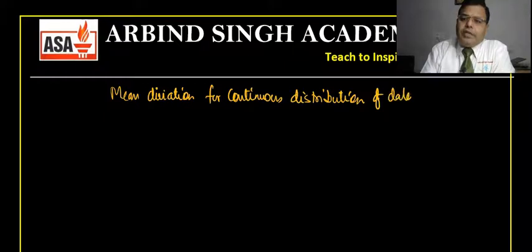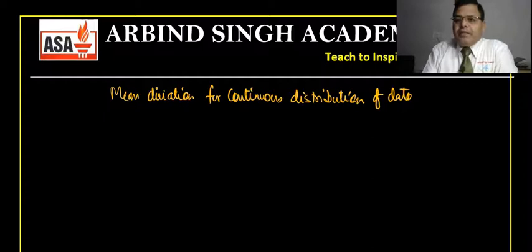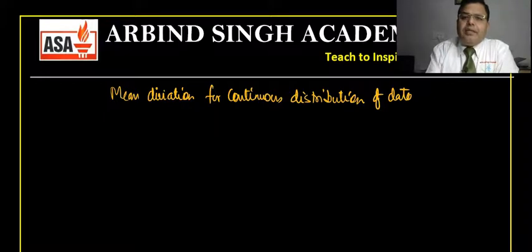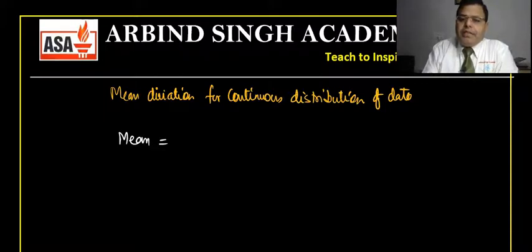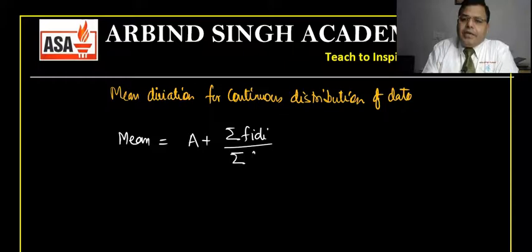Continuous distribution means data are classified in class intervals, and then we have to calculate mean deviation about mean. When data are given in classes, the mean can be obtained using the formula: mean = a + (Σfi·di / Σfi) × h, where i goes from 1 to n.